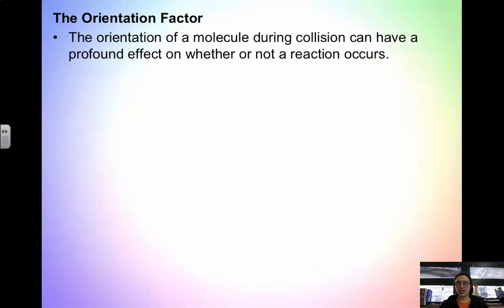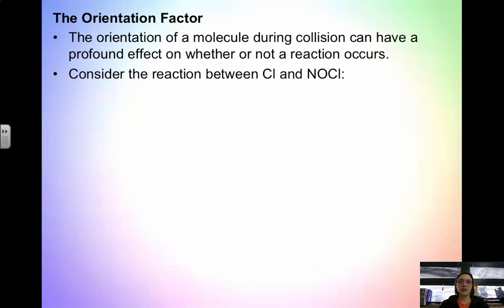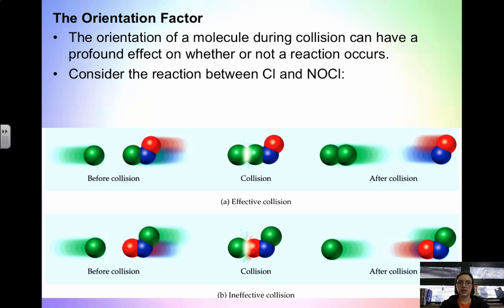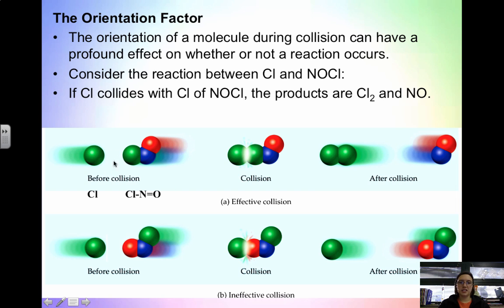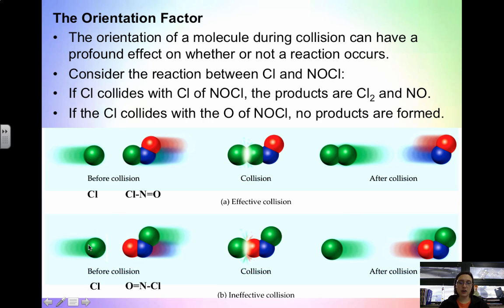Looking first at the orientation factor: the orientation of a molecule during a collision can have a profound effect on whether or not a reaction occurs. If we look at the reaction between Cl (the green sphere) and NOCl, if Cl collides with the chlorine in the compound, we can produce Cl2 and NO. However, if the Cl collides with the oxygen in the compound, they actually don't form any products. So proper orientation is essential so that the molecules come in contact with each other in the correct place.